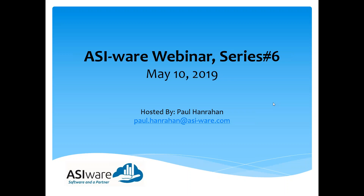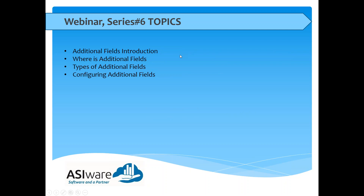Hello and good afternoon, welcome to ASIware's webinar series 6 on the Vallejo platform. Today we are covering additional fields. I'm going to do a brief introduction, then show you where additional fields are located on the Vallejo system, then go over the types of additional fields, and give you some examples of configuring each type.